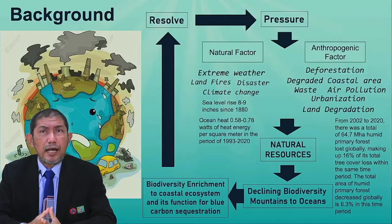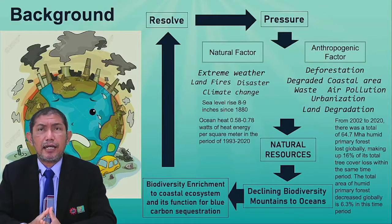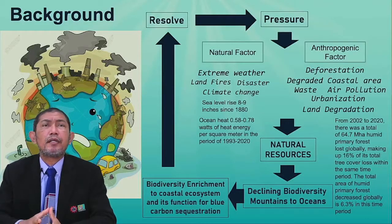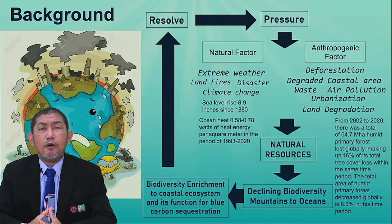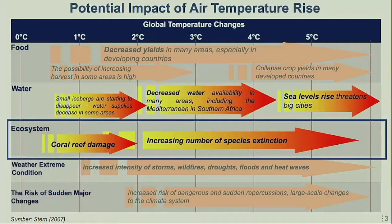This is a clear example of deforestation driven by anthropogenic factors. From these various conditions, the coastal area is the most critical area because it is a connecting zone between terrestrial and oceanic areas, so that the biodiversity enrichment of the coastal ecosystem and its function for the blue carbon system must be protected. The most recent meetings, including COP26, have supported the mandate to maintain temperature between 1 to 2 degrees Celsius relative to pre-industrial conditions, per the Paris Agreement.